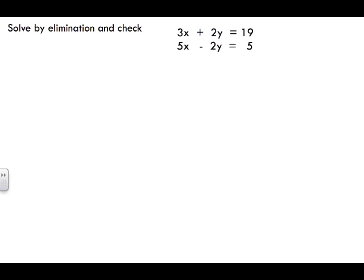Let's look at what elimination means. When we're asked to solve by elimination, first thing you want to look for are your variables — your x's and your y's. What you're looking for is whether the x's match, and when we talk about matching, not just the x matching but the coefficient, the number in front of x. Here in front of x we've got 3, and in front of the other x we've got 5. But if we look at y, in front of one y we have 2, and in front of the other y we have a negative 2.